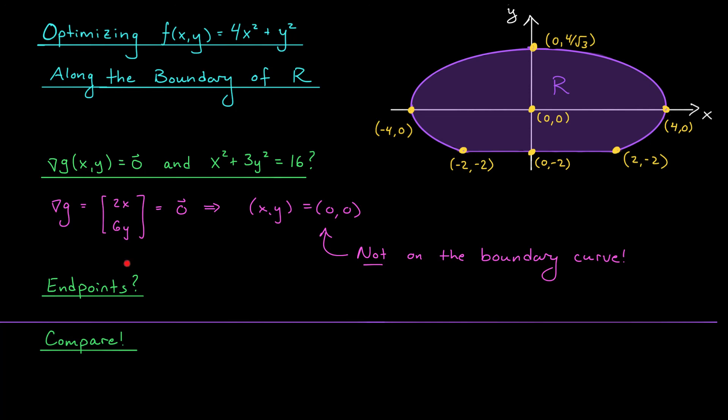We also have to make sure to include the endpoints of our boundary curve. These points, (-2, -2) and (2, -2), caught our attention already when we examined the other boundary component, the line segment, so we don't actually get anything new here.